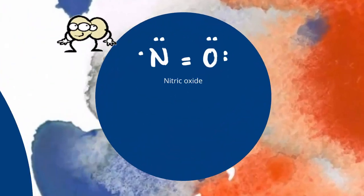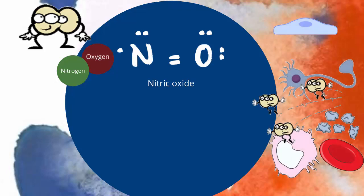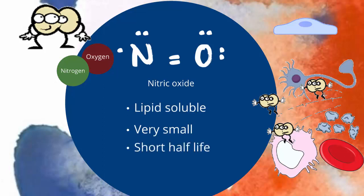Nitric oxide is a colourless gas made from an oxygen and nitrogen molecule joined together. It's produced by nearly every cell type. Its superpower is that it's small and nimble, but it's not very stable — it only lasts a few seconds. But that's long enough to do some important chemistry, both inside the cell that made it, as well as the cells in the neighborhood.